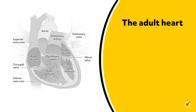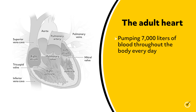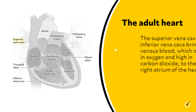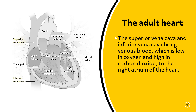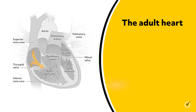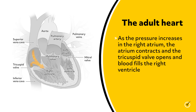The heart is an extremely efficient pump, capable of pumping 7,000 liters of blood throughout the body every day. The superior vena cava and inferior vena cava bring venous blood, which is low in oxygen and high in carbon dioxide, to the right atrium of the heart. As the pressure increases in the right atrium, the atrium contracts and the tricuspid valve opens, and blood fills the right ventricle.